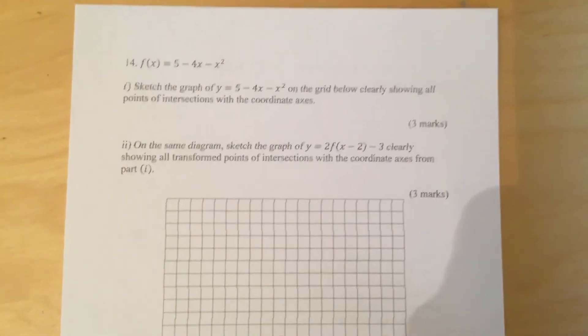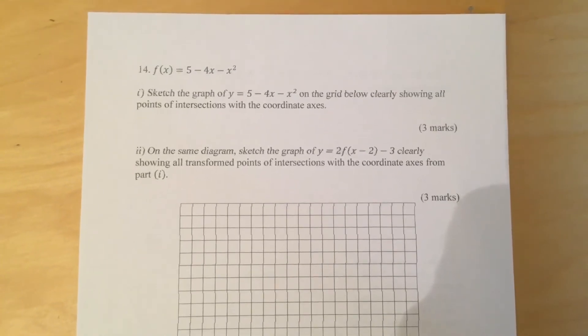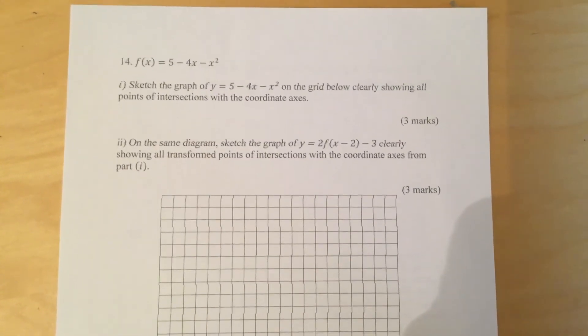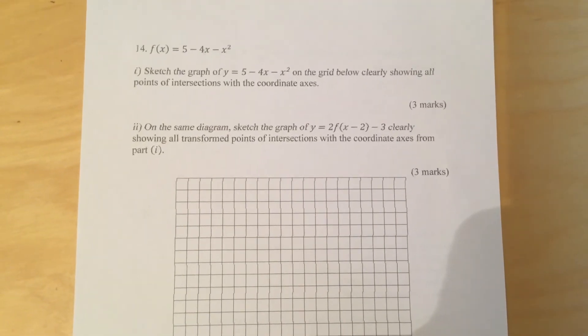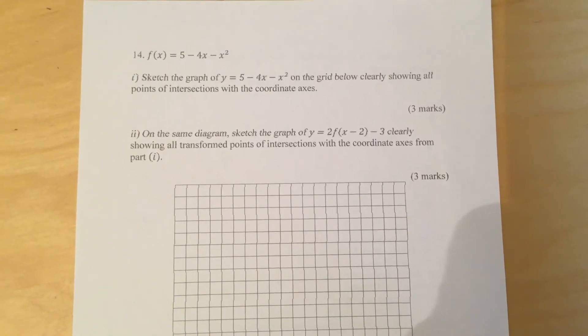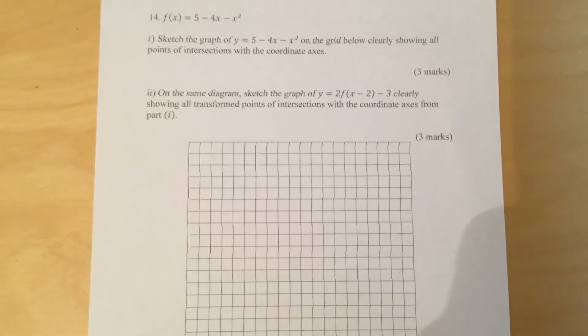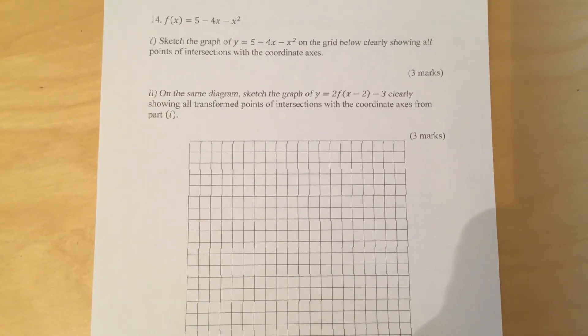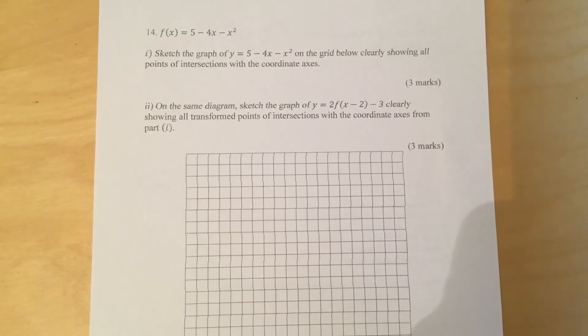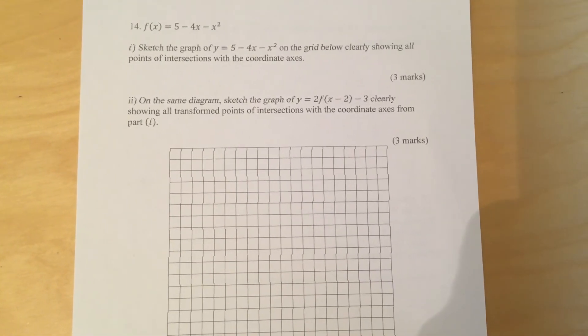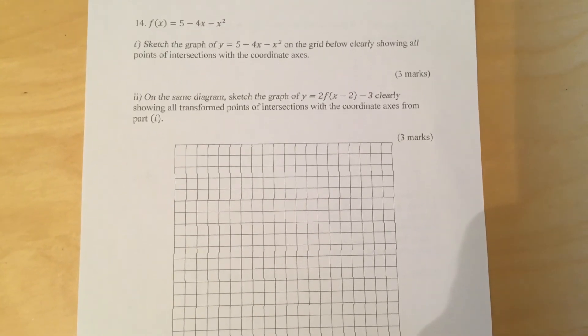Question 14. F of X is equal to 5 minus 4x minus x squared. Sketch the graph of Y equals 5 minus 4x minus x squared on the grid below, clearly showing all points of intersections with the coordinate axes. On the same diagram, sketch the graph of Y equals 2 F x minus 2 minus 3, clearly showing all transformed points of intersections with the coordinate axes from part 1.